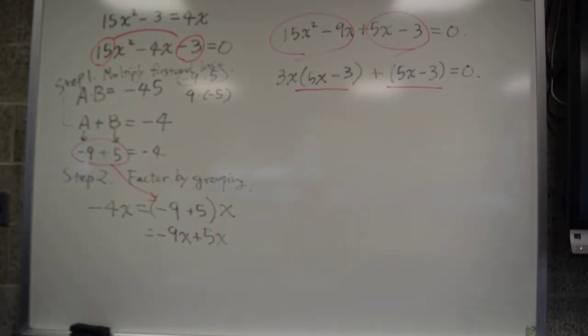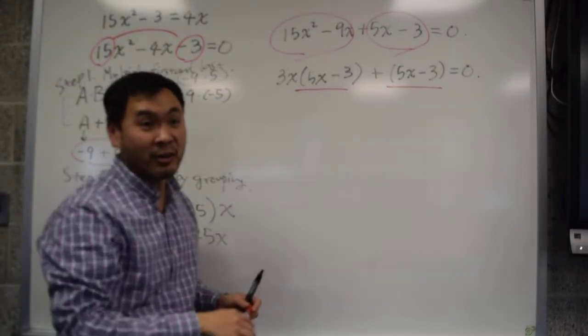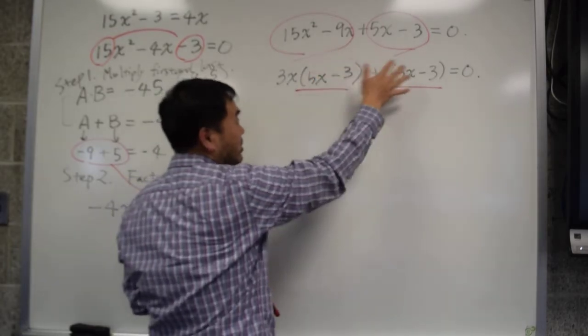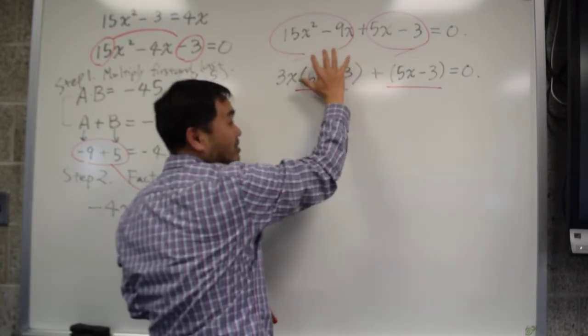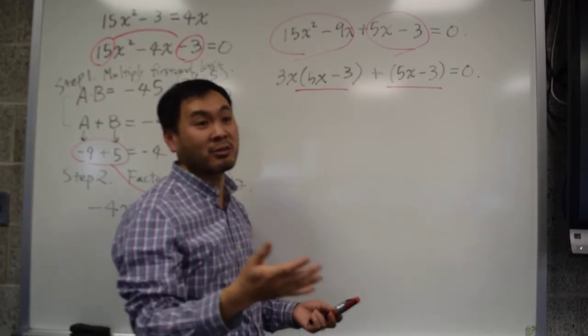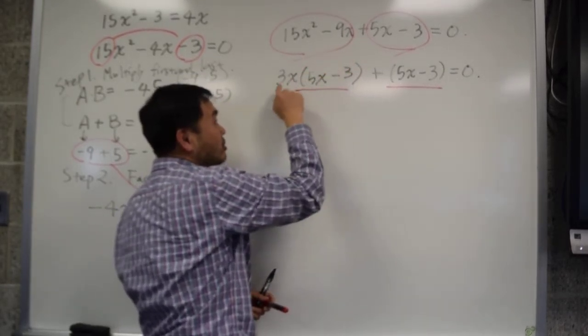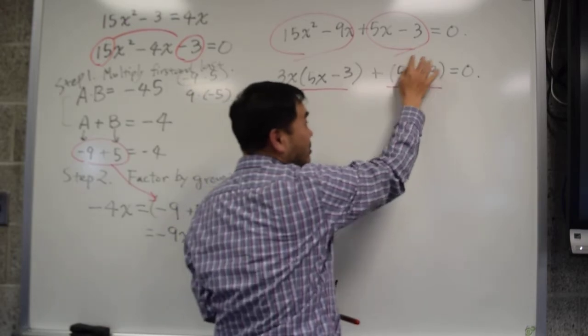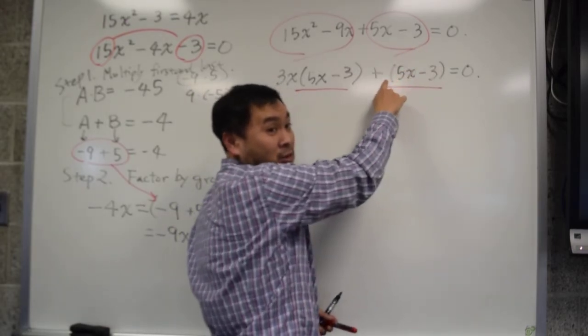If you have something that's identical, then you can factor that out, right? So 5x minus 3 looks complicated, but think about this as a number. That's a number, right? If x was some number, 5x minus 3 would be another number. So it's some kind of number multiplied to 3x, some kind of number times 1.